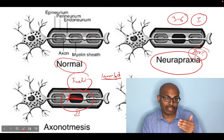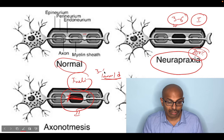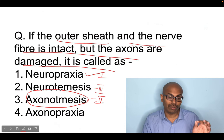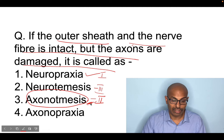In neurotmesis, there is complete transection of the nerve and surgical intervention is mandatory — either nerve repair or nerve grafting between the fascicles. So the answer to the question is axonotmesis, which is grade two of the Seddon classification, where the outer sheath is intact but the inner endoneurium and axons are damaged.